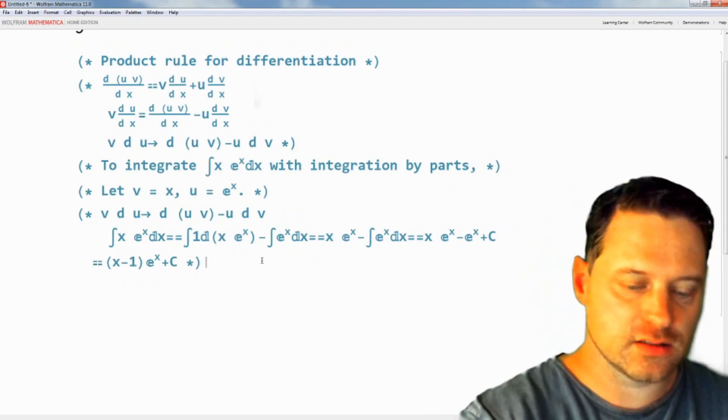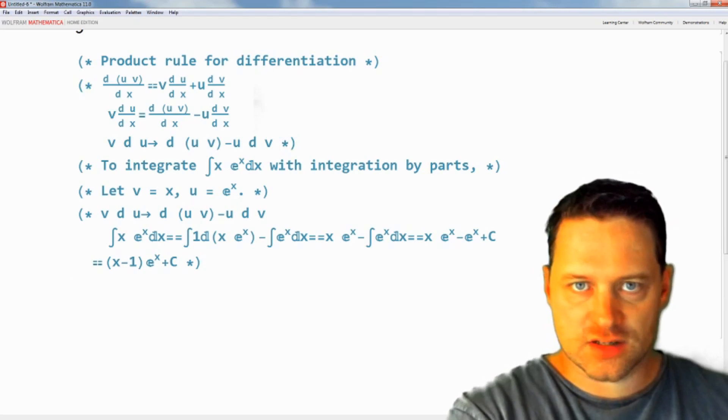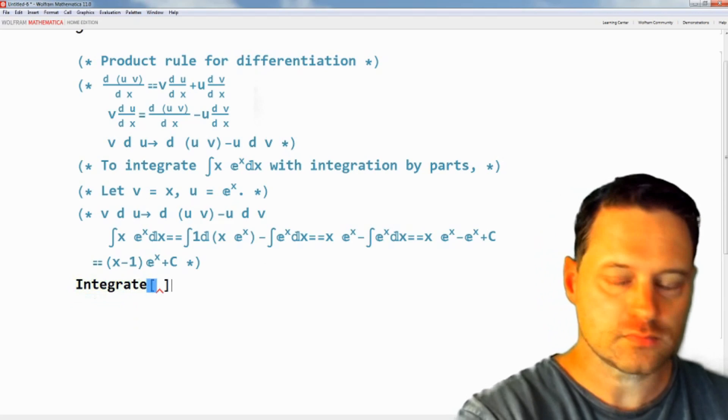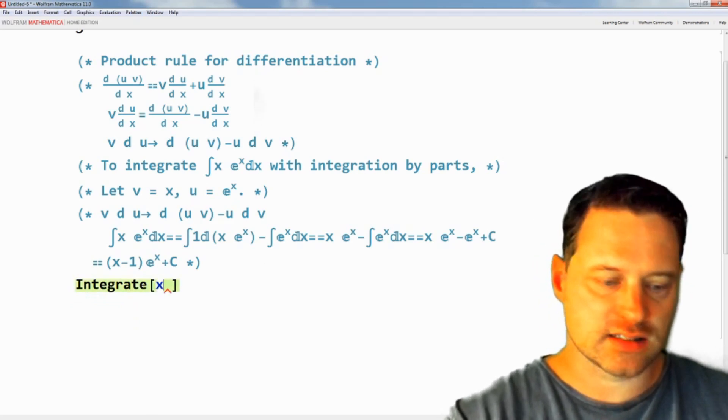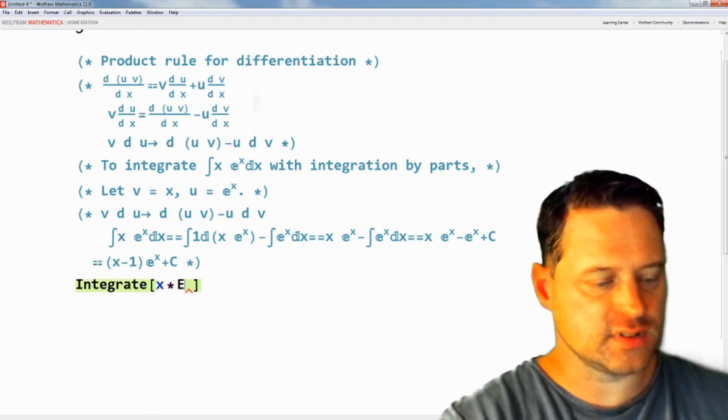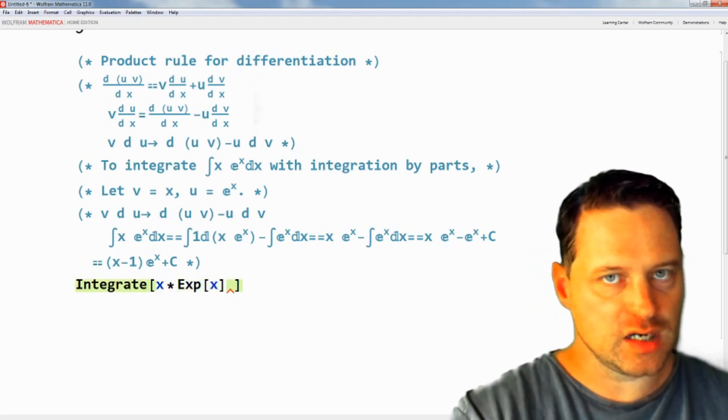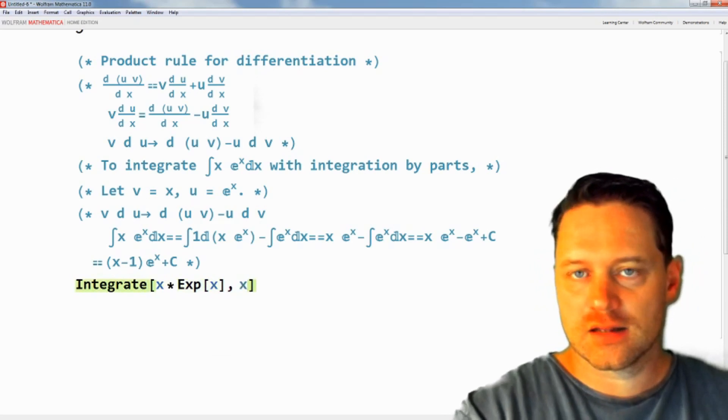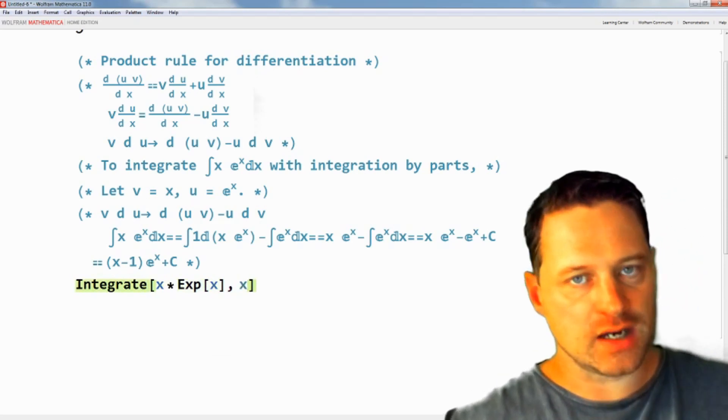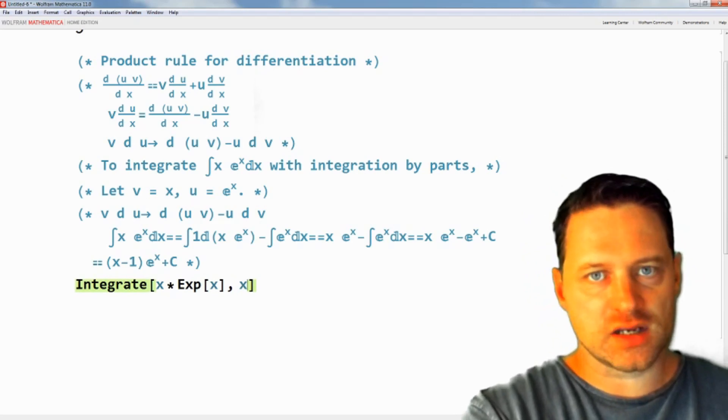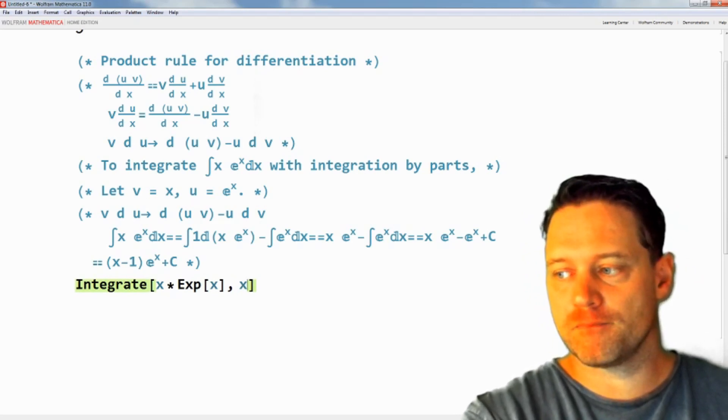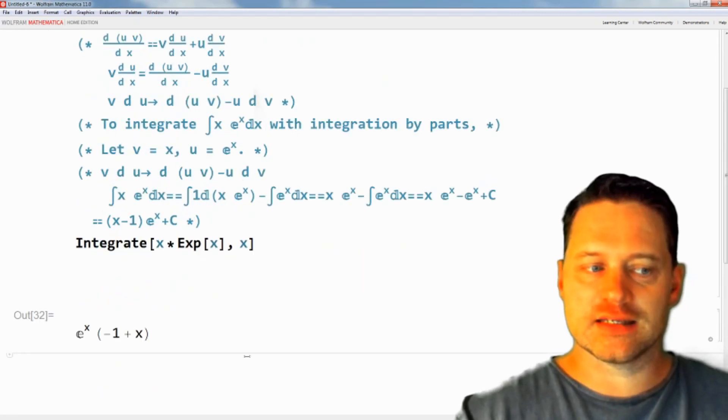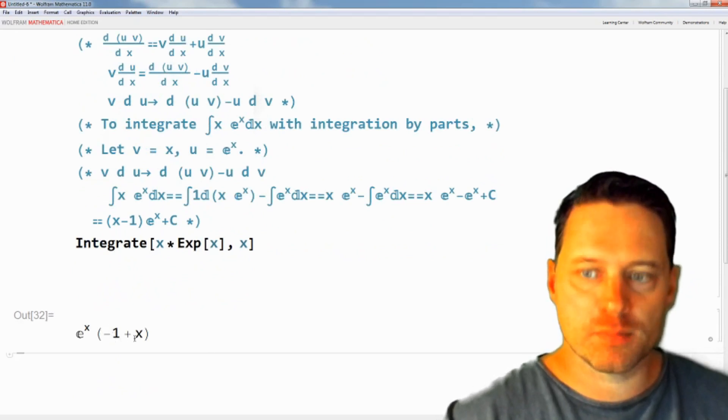Now the command to integrate this would be to just write Integrate. Then I'll write x and then times, and I can put Exp[x] to mean e to the x. Then I say I want to integrate this with respect to x. This is not the only way that you can enter this into the computer to calculate this, but it's one way. Let's press shift enter and see what we get.